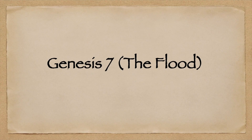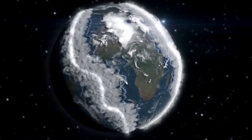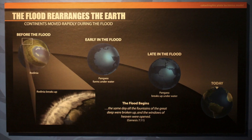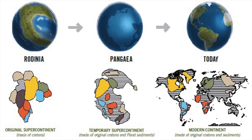Genesis chapter 7 mentions the flood — a flood that would have covered the whole earth from a young earth perspective. The earth would have been Pangea, and the flood would have covered and broke it apart under the waters. This is how we have our modern world today. The tectonic plates would have broken apart under the waters during the flood, creating the modern continents. I have a Young Earth Creationism playlist you can check out.